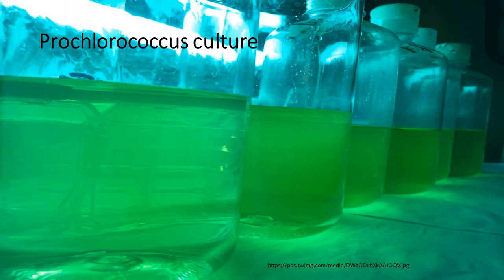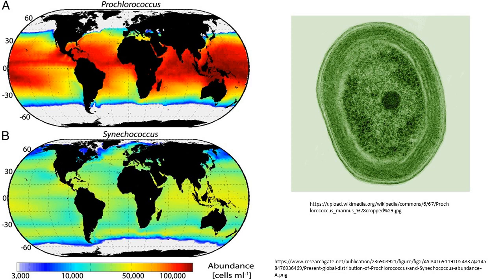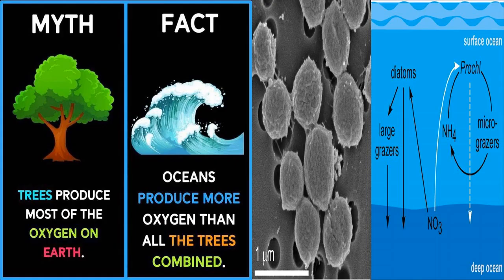A single millimeter of surface water can contain more than a lakh cells. Worldwide, there are estimated to be an octillion — that is 10 to the power of 27 — individuals. Prochlorococcus is ubiquitous between 40 degrees north and 40 degrees south latitudes, and dominates the oligotrophic, or nutrient-poor, regions of the oceans.